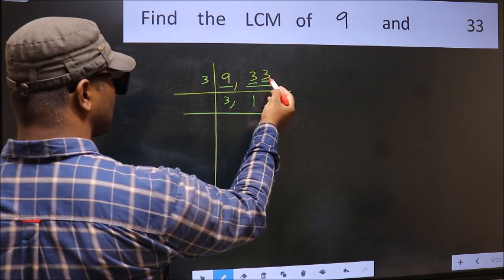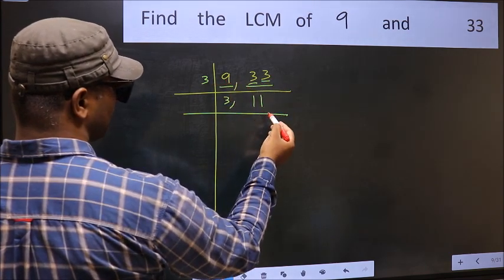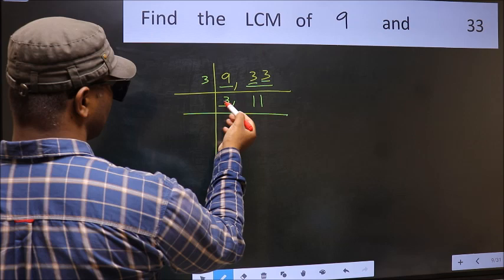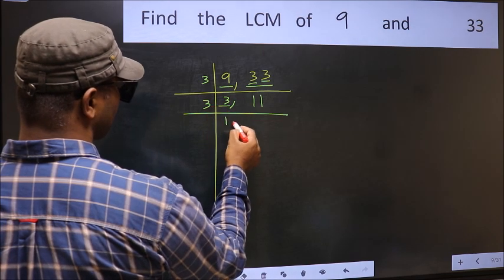The other number 3. When do we get 3 in 3 table? 3 once 3. Now here we have 3. 3 is a prime number. So 3 once 3.